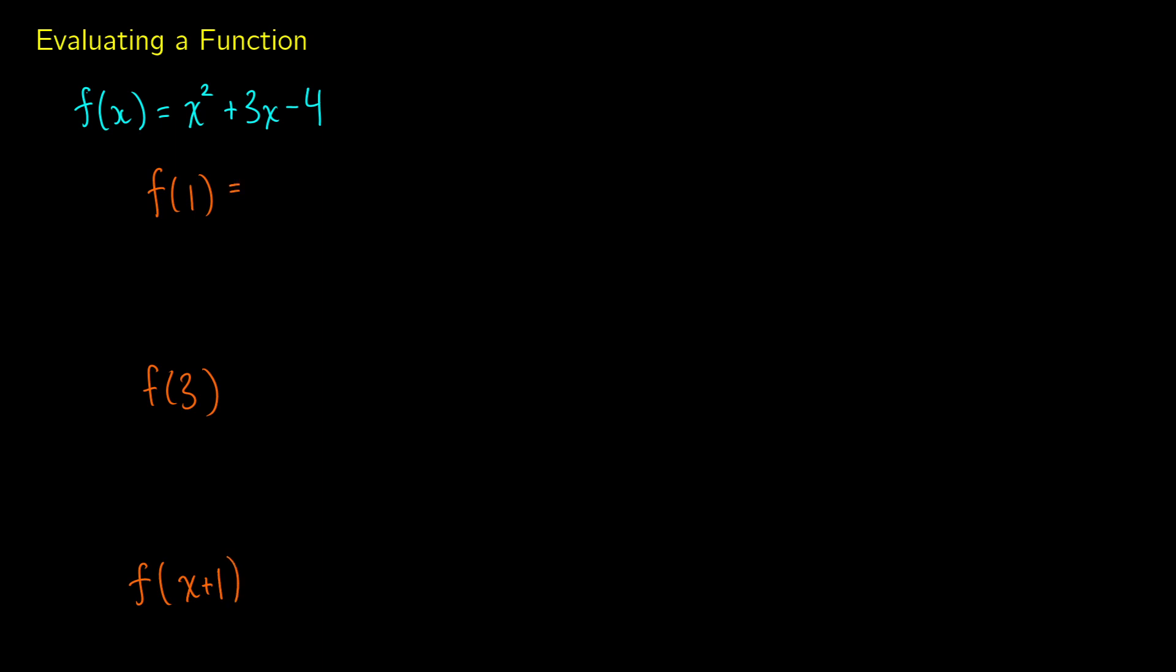So let's do f(1) first. So the rule is we're going to replace all of our x's with 1's. So we're going to get 1 squared plus 3 times 1 minus 4. This is going to give us 1 plus 3 minus 4, and if we add all these together we're going to get 0. So in other words in our little function machine we put in 1 and what's going to come out, we're going to get 0.